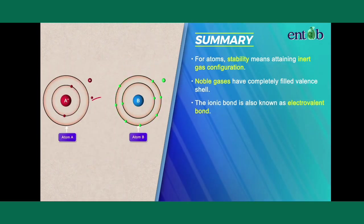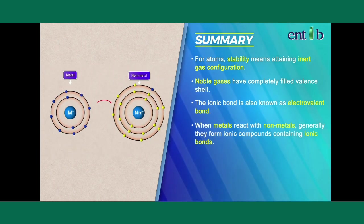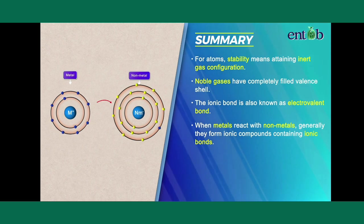The ionic bond is also known as an electrovalent bond. When metals react with non-metals, they generally form ionic compounds containing ionic bonds.